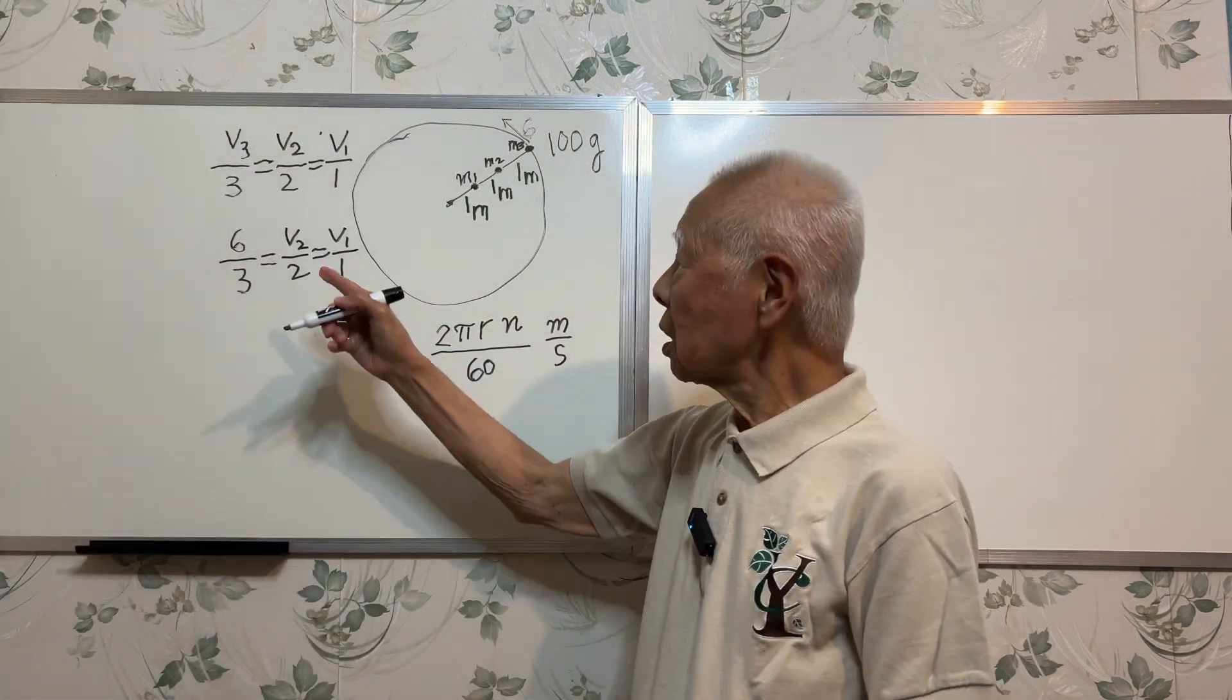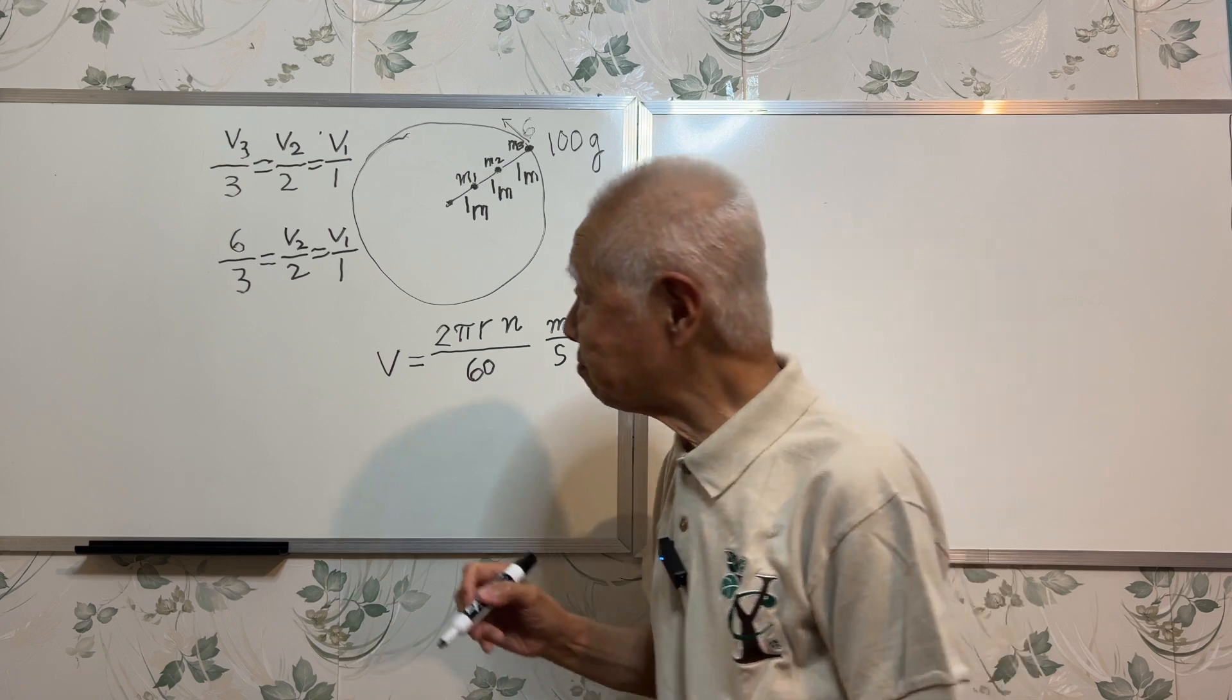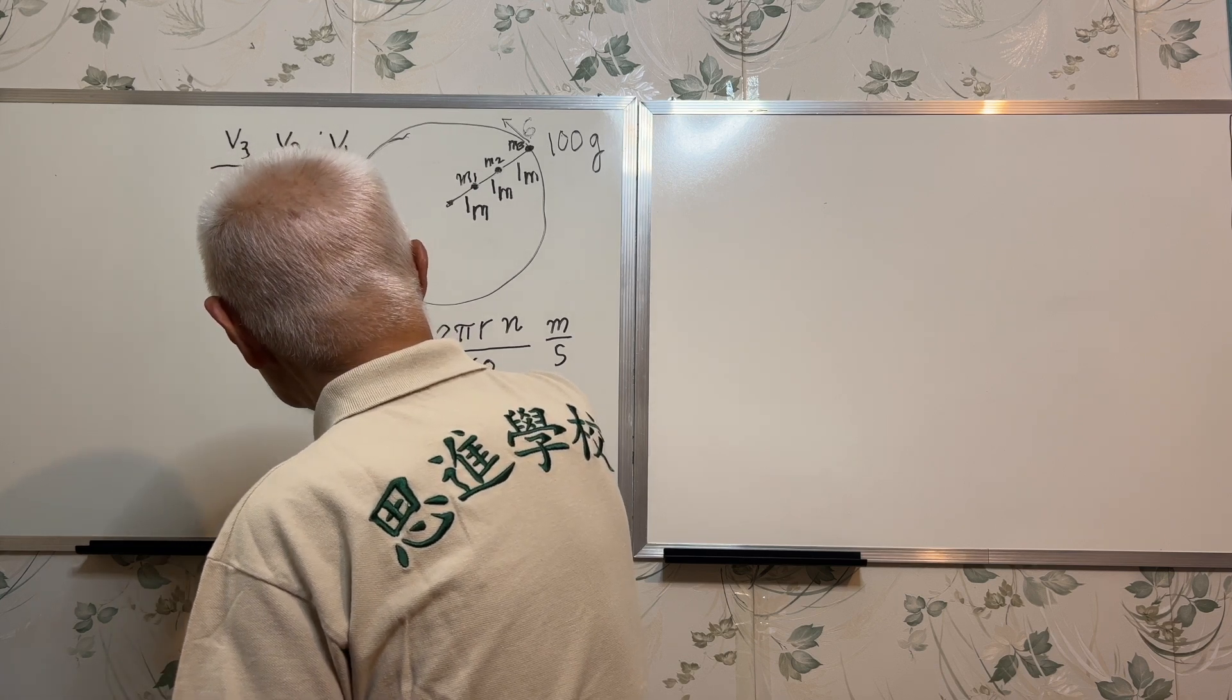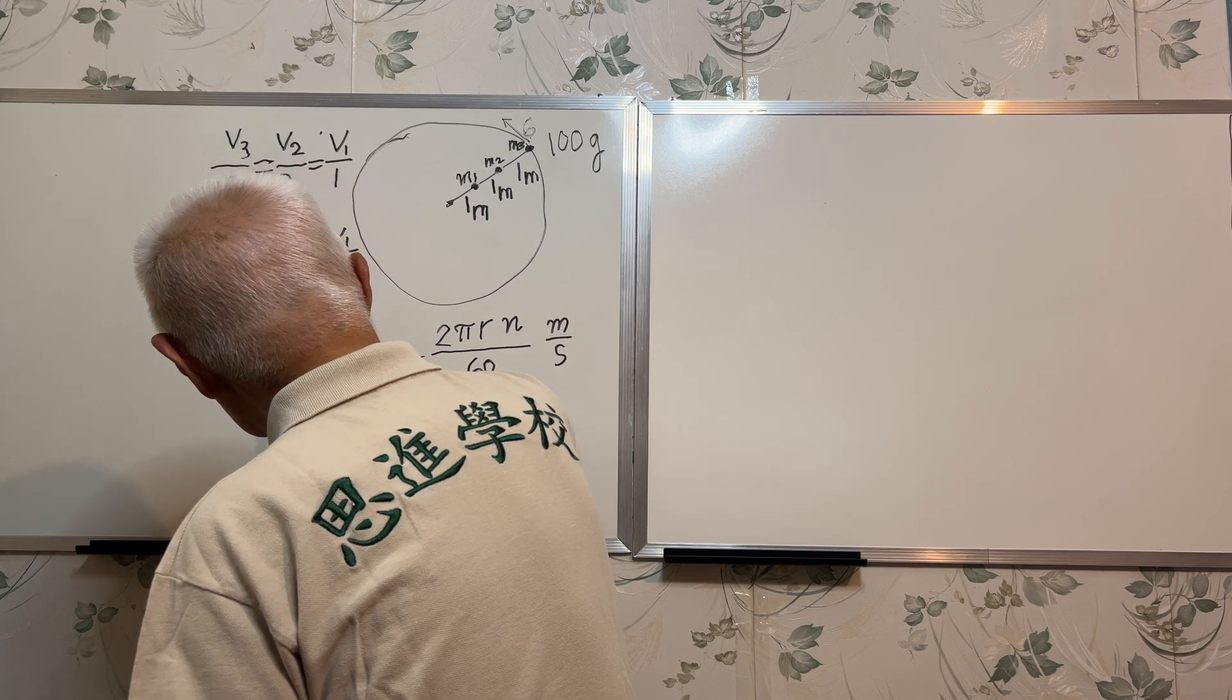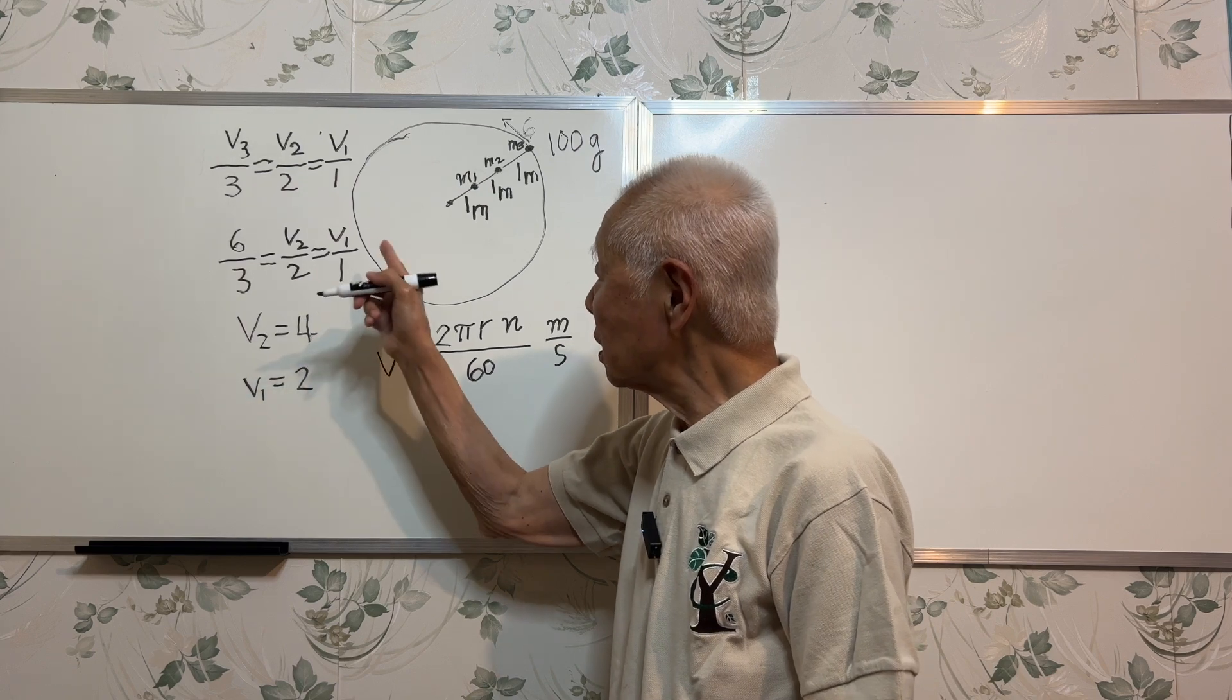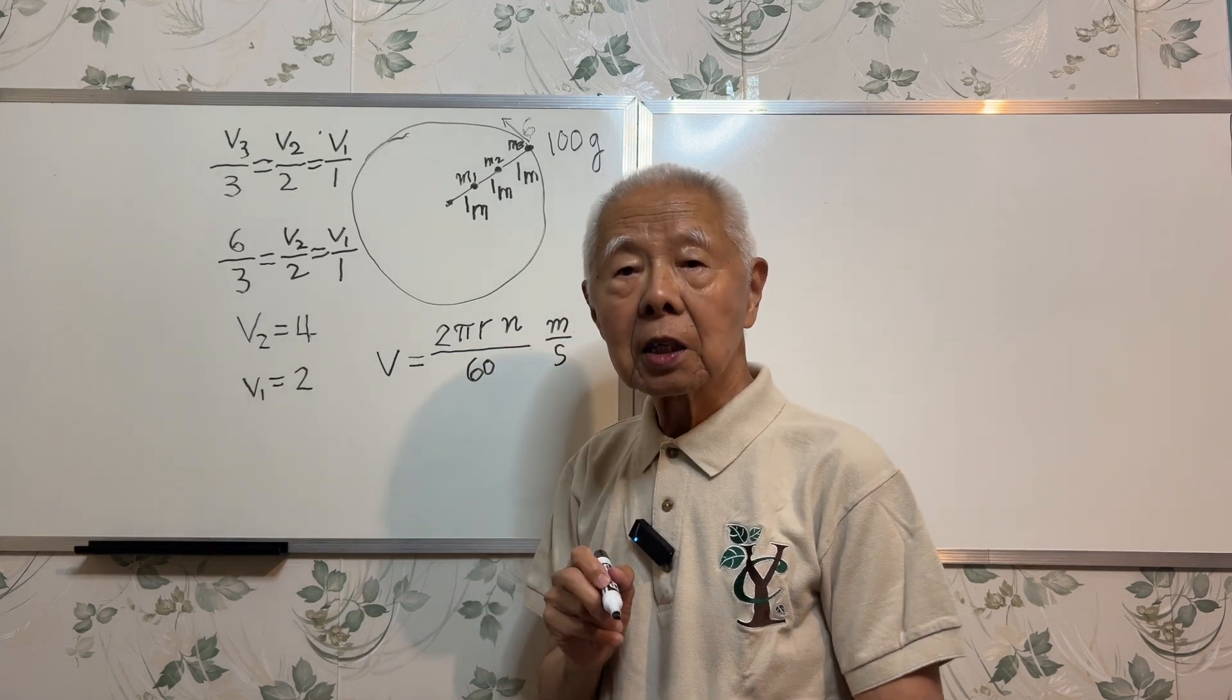So I have 6 over 3 equals v2 over 2 equals v1 over 1. From this relation I can find v2 and v1. It is not difficult to find v2 and v1, so v2 is 4 meters per second and v1 is 2 meters per second.